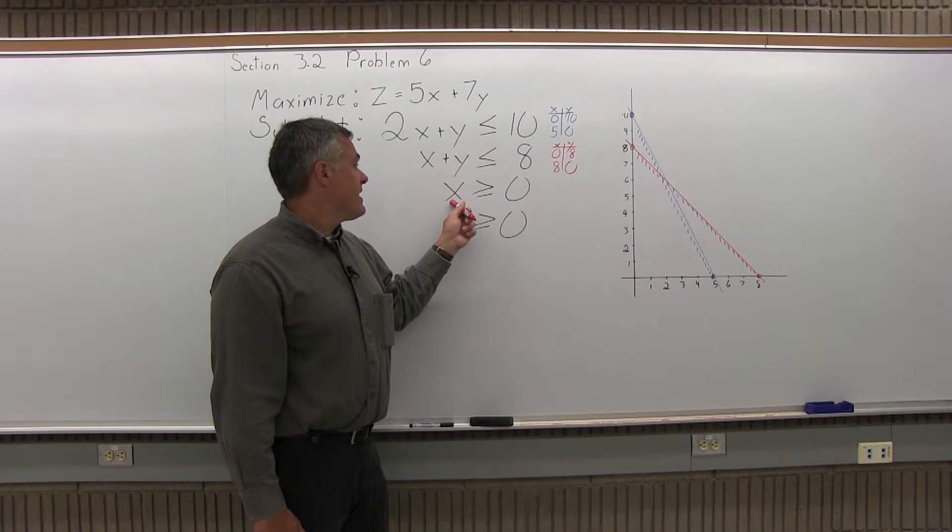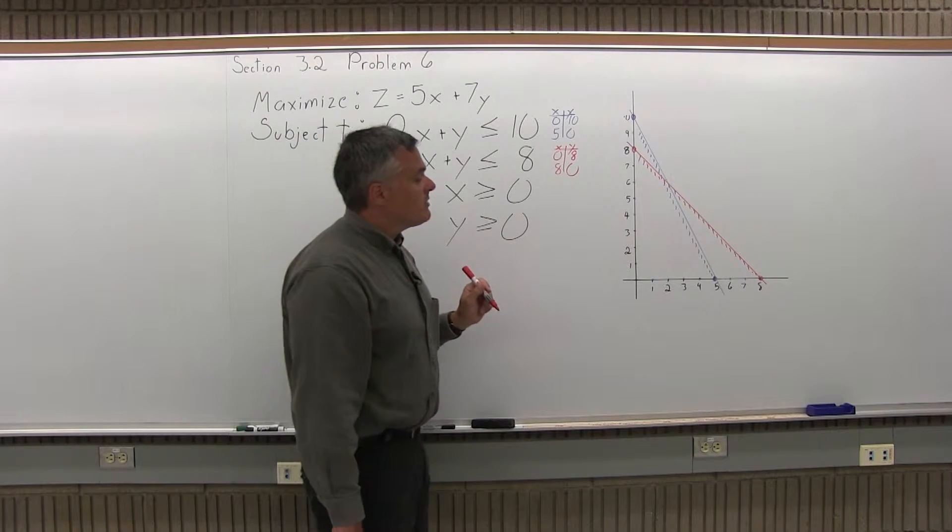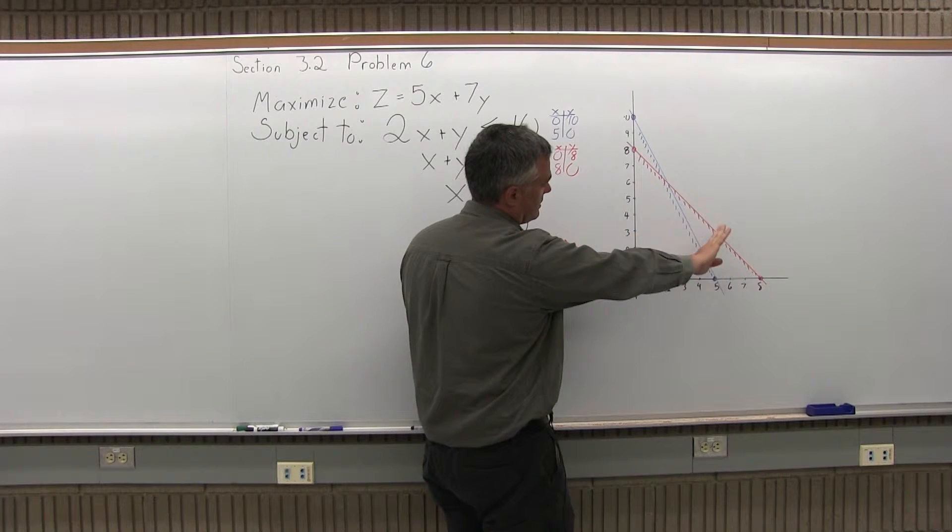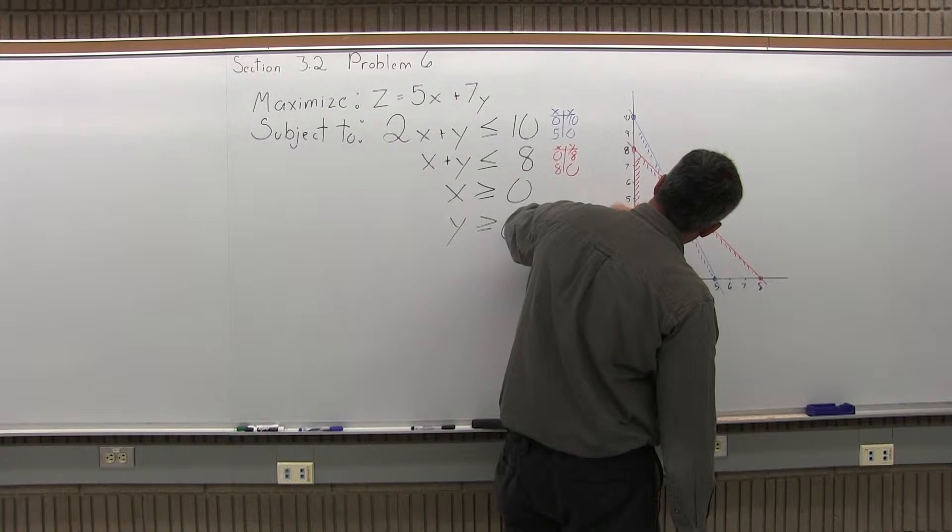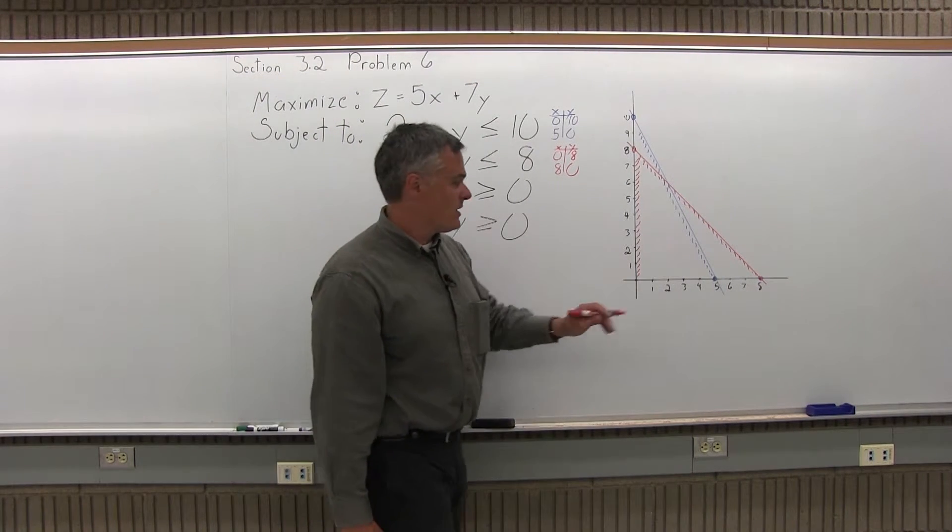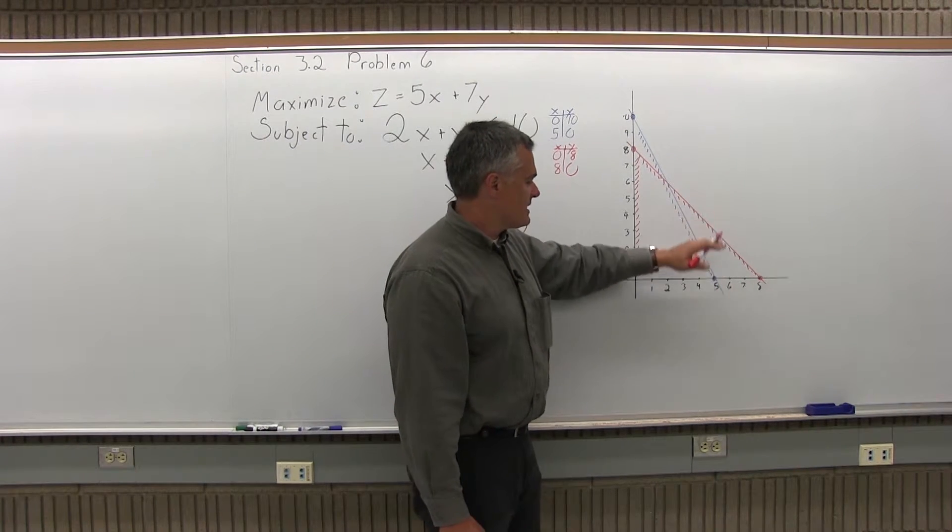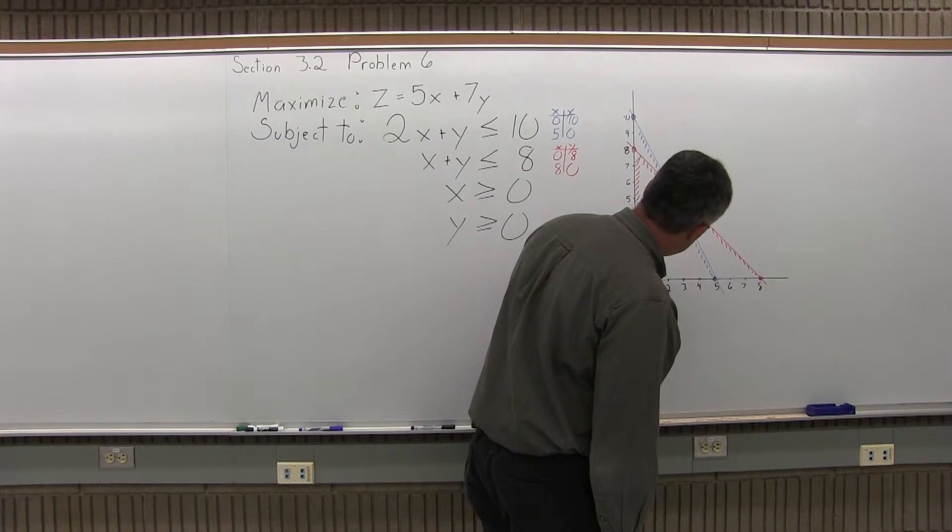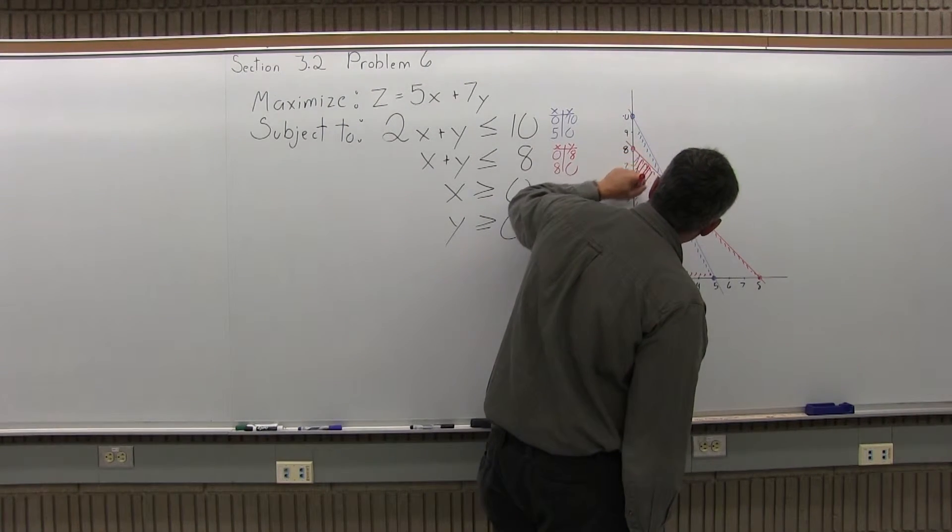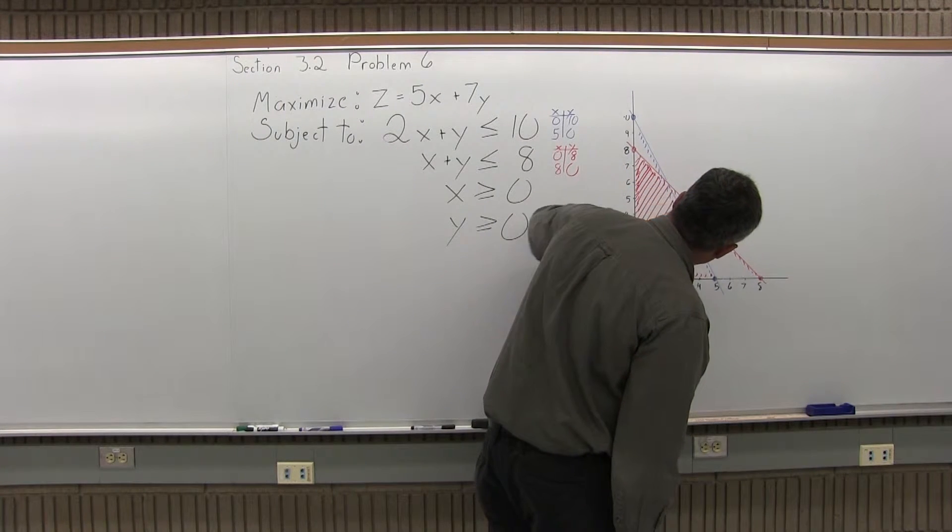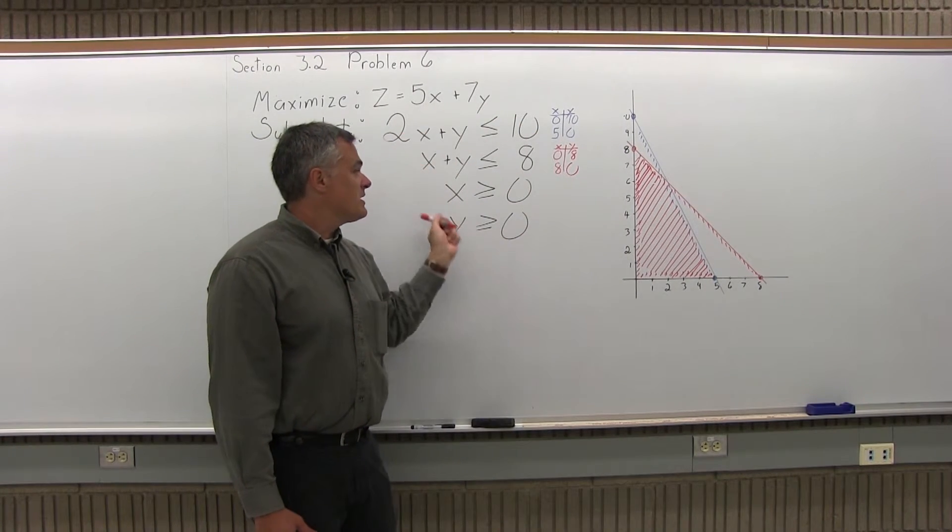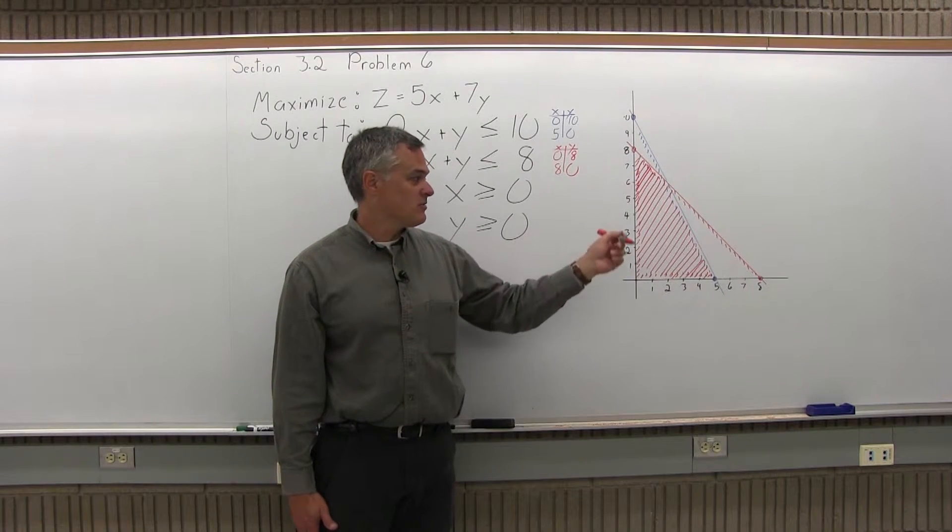Now the next linear inequality, x is greater than or equal to 0, is telling me that any point in my feasible region has to have a positive x coordinate, which means I have to be to the right of the y axis. Anything to the left of the y axis would have a negative x value, so I have to be to the right. And y is greater than or equal to 0 means any point in my feasible region has to have a positive y coordinate. My points have to be above the x axis because if I go below, the y values become negative, so I have to be above. Now where all that shading overlaps is my feasible region, so I'll just darken that in a little bit. So the more heavily shaded area is the area that satisfies all of my constraints simultaneously, that's the feasible region. So that's step one, graph the feasible region, it's been graphed.